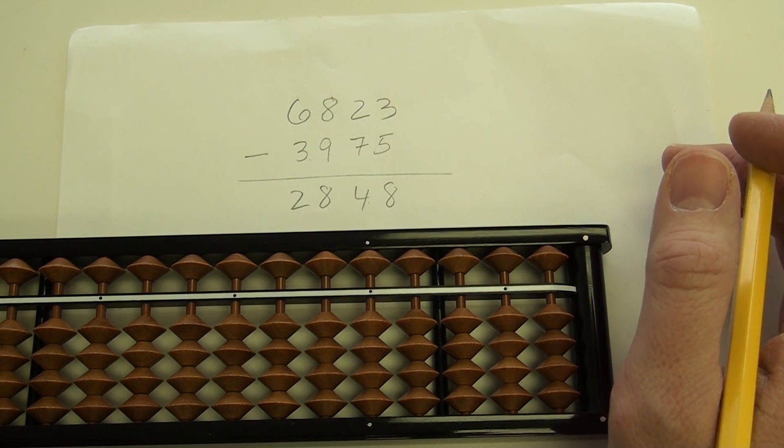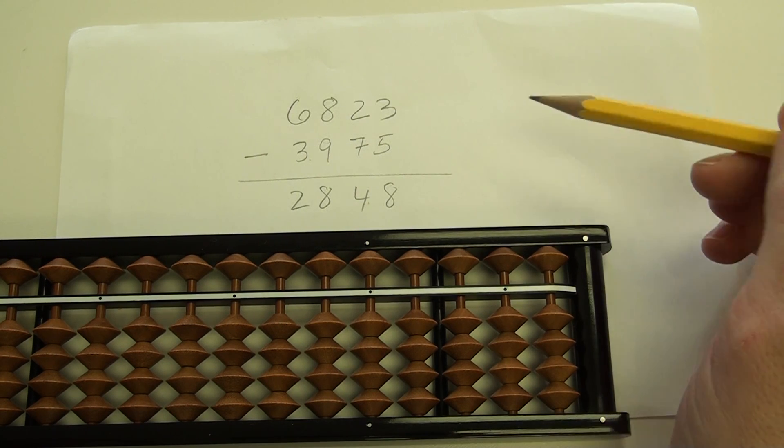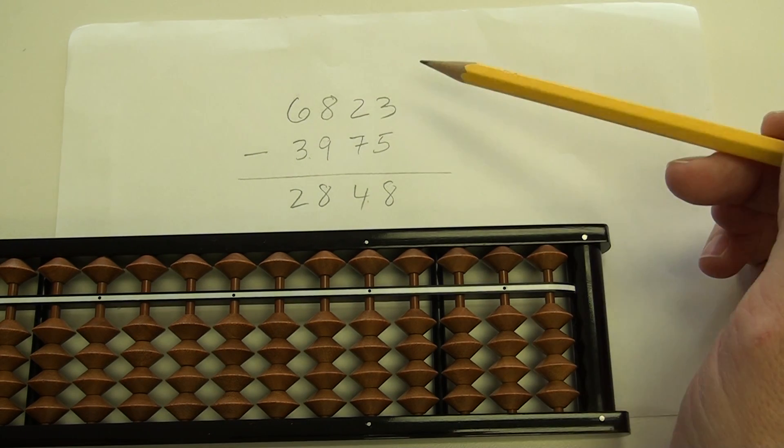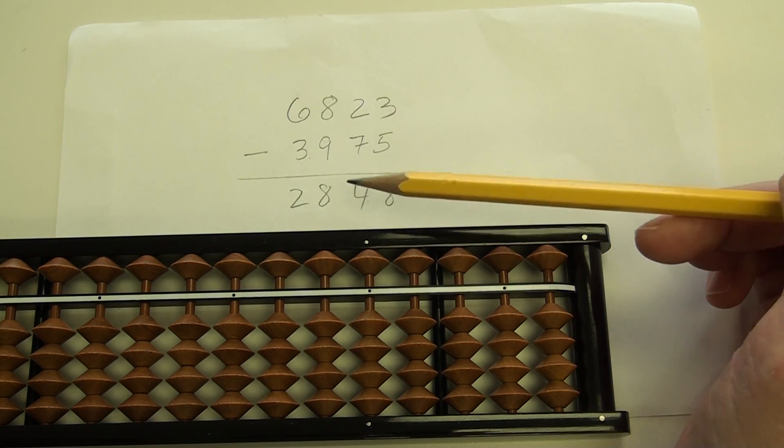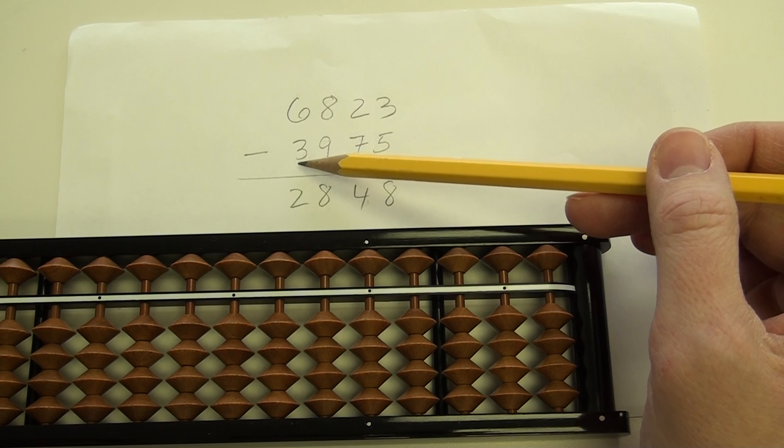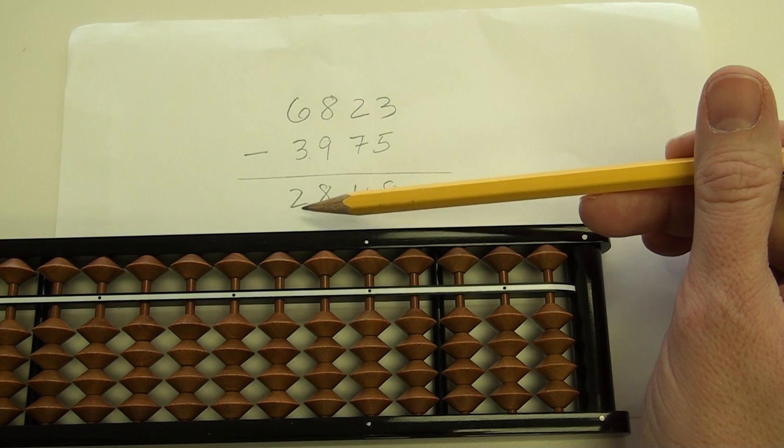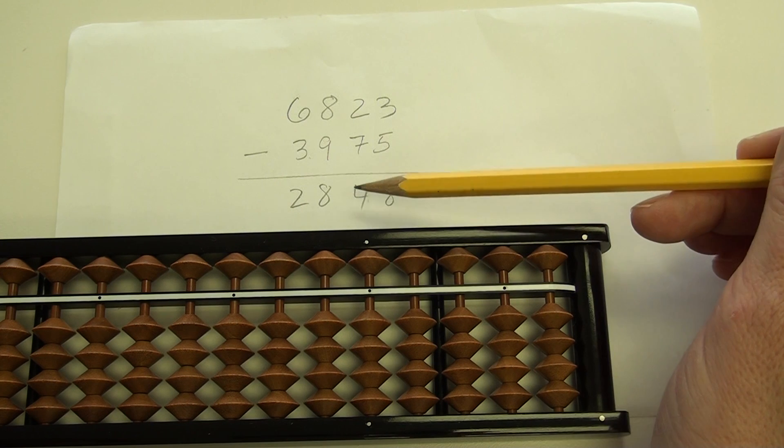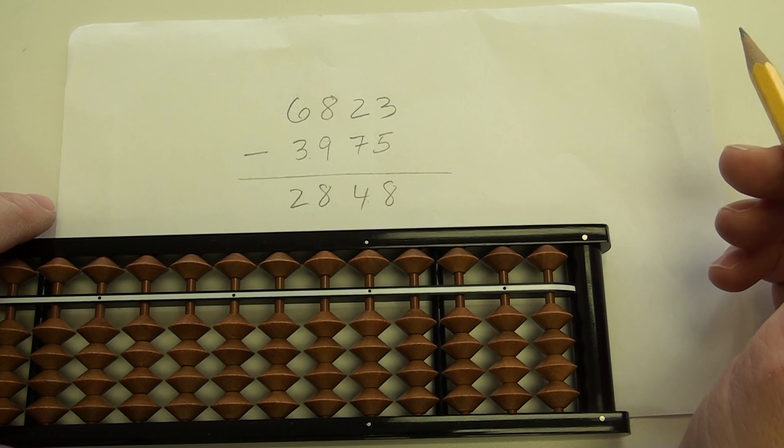I'm going to demonstrate how to subtract with a soroban, or a Japanese abacus. And for my example here, I have 6,823, and from that I'm going to subtract 3,975. Now my answer is going to be 2,848, so I will demonstrate how to perform that subtraction.